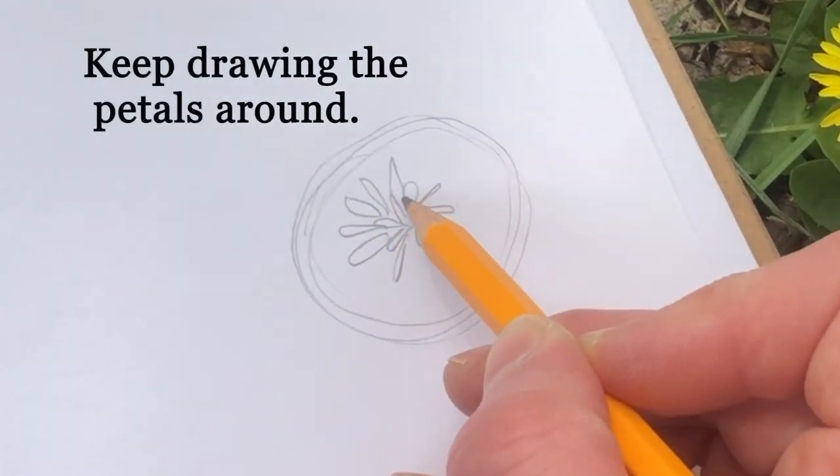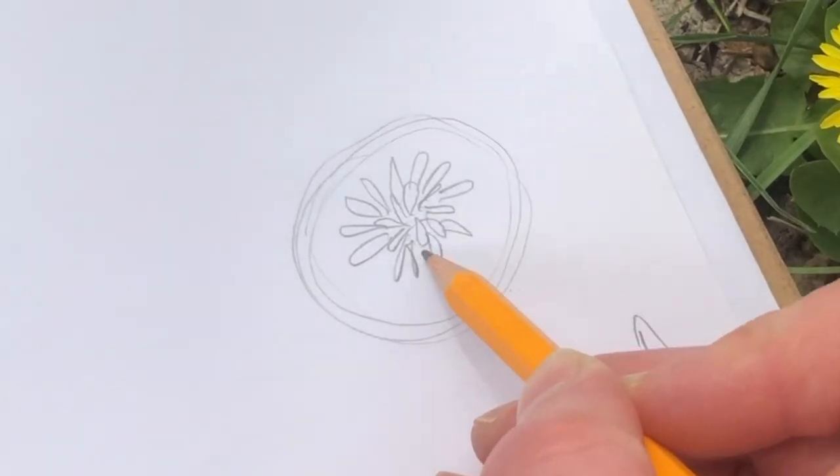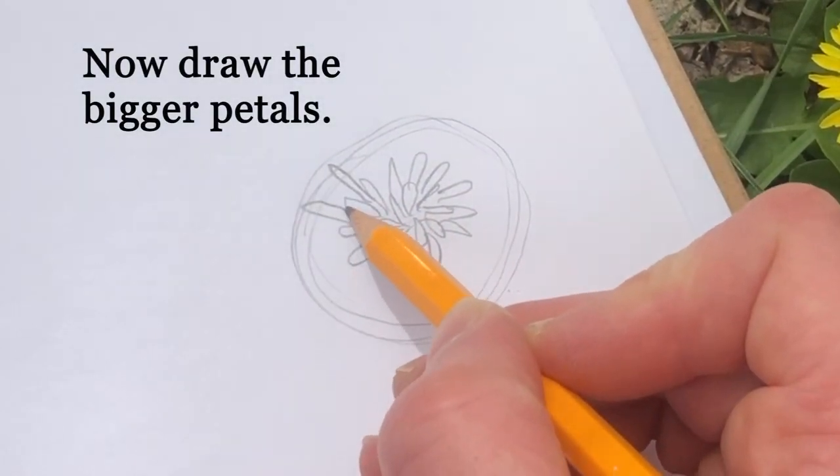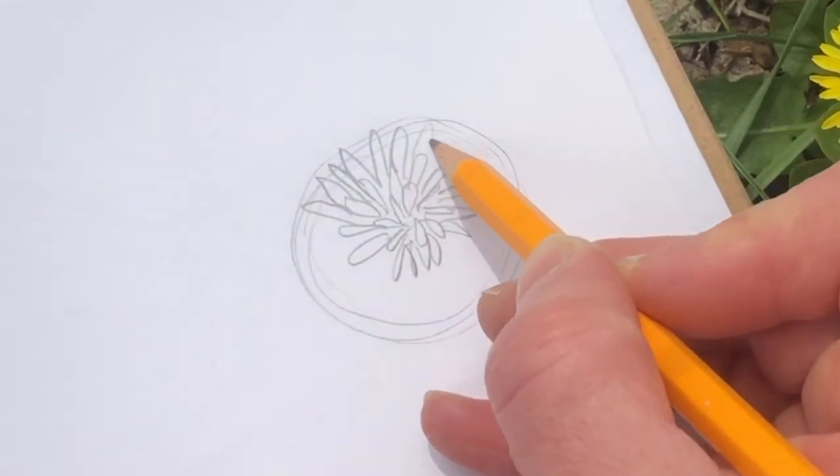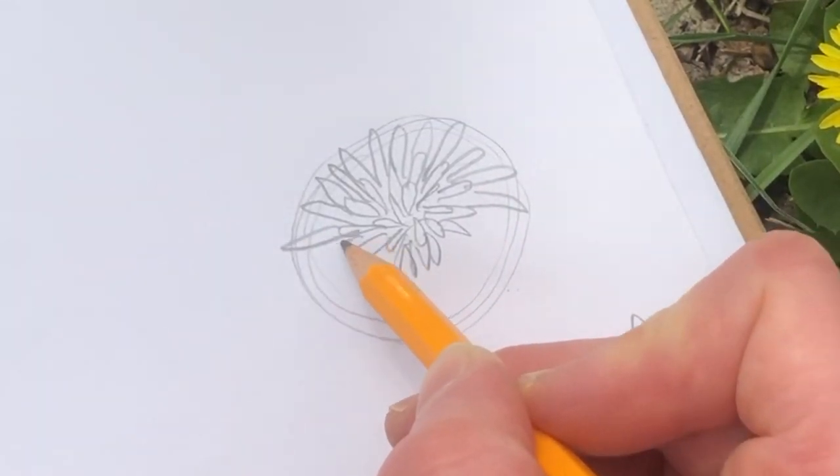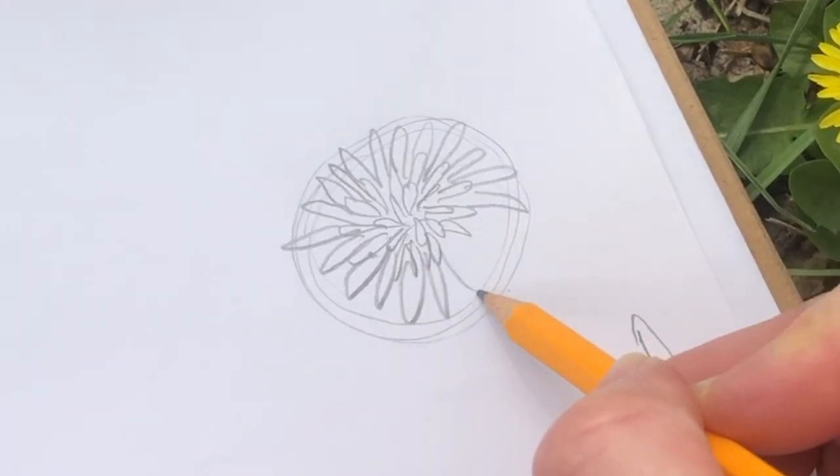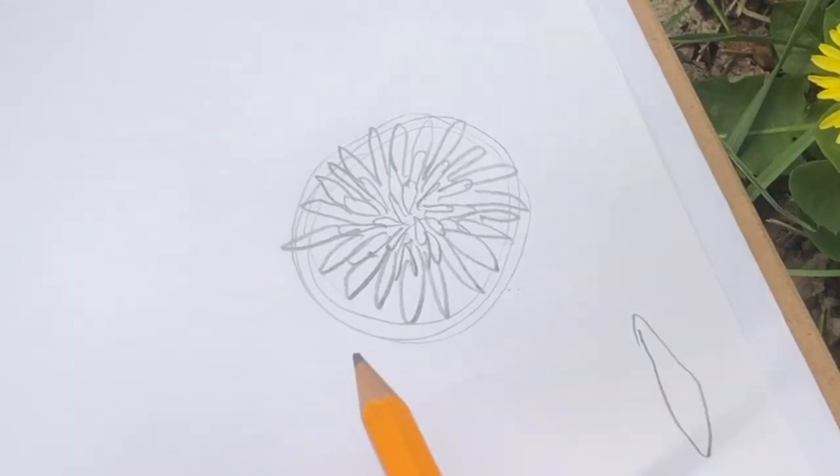Okay, so once I have the idea of where the petals belong, I can now do those bigger ones so that I can complete the shape of my dandelion. It doesn't have to be perfect, it just has the idea, the overall shape.